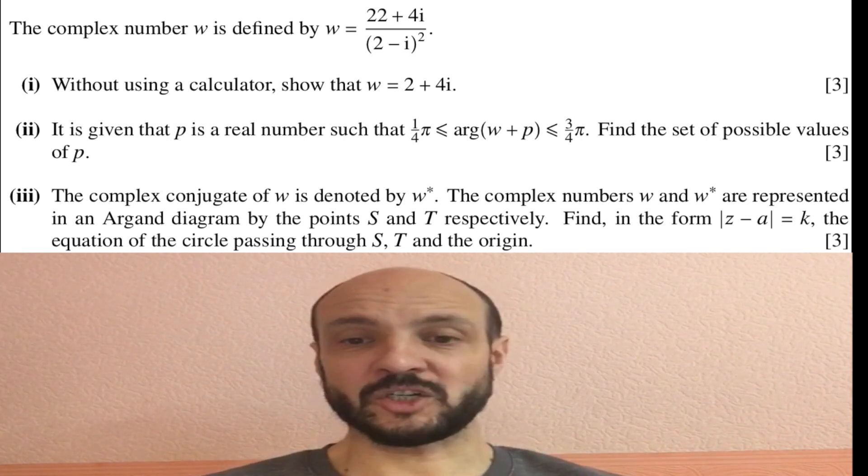Part three: The complex conjugate of w is denoted by w star. The complex numbers w and w star are represented in an Argand diagram by the points s and t respectively. Find in the form the modulus of z minus a equals k the equation of the circle passing through s, t and the origin.